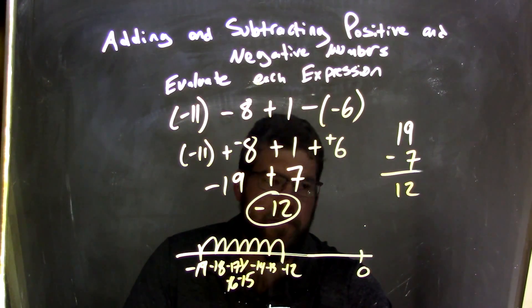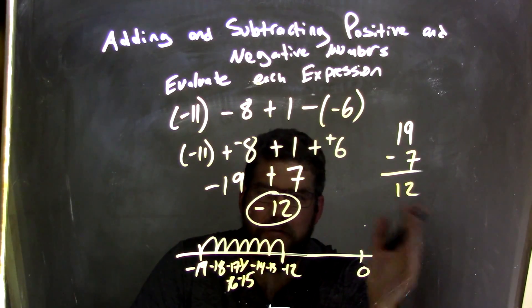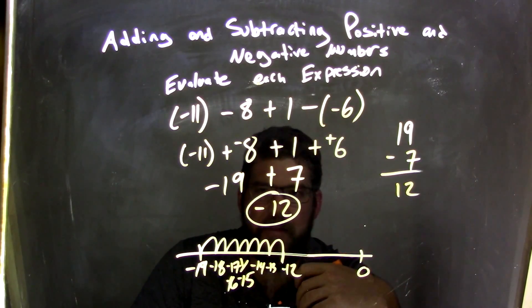And then I slap on a negative at the end. So I know it's going to be negative, but the difference between the two, 19 and 7, in a sense, is 12, and then just slap on a negative at the end.